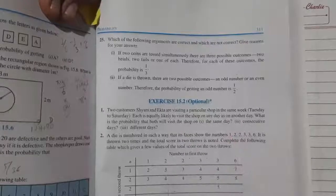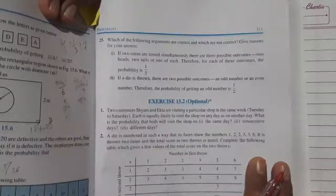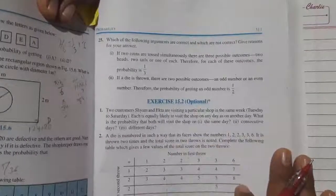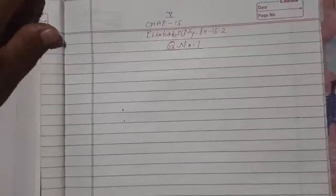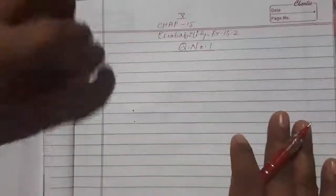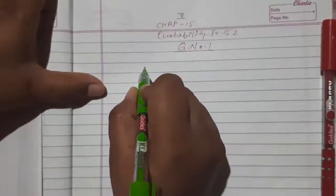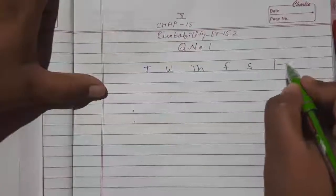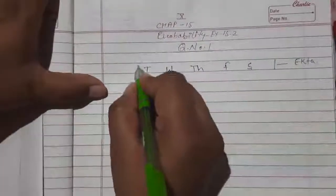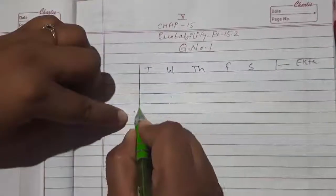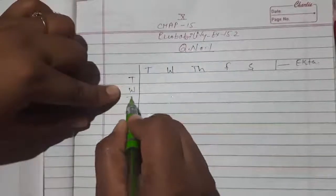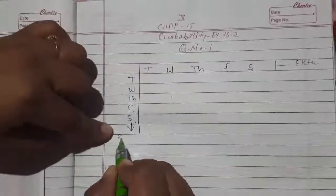We will see how many possible outcomes there could be for visiting the shop. We can prepare pairs of days and count all possible outcomes. Five days — Tuesday, Wednesday, Thursday, Friday, and Saturday — are listed vertically for one customer (say Shyam) and horizontally for the other (Ekta).